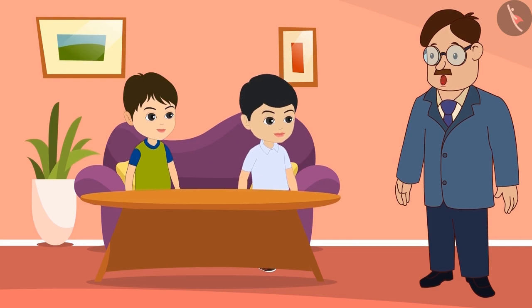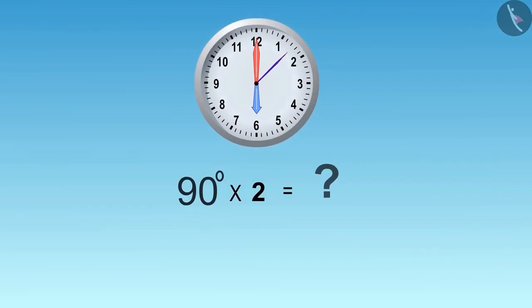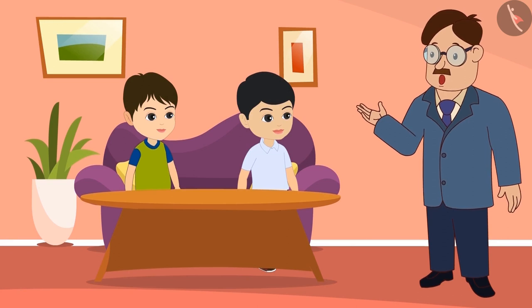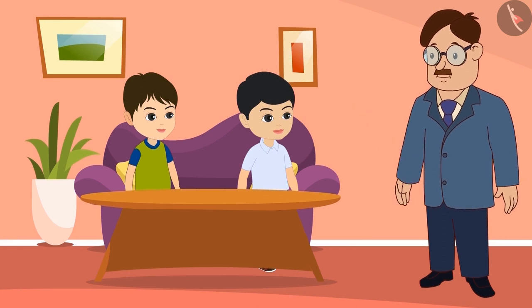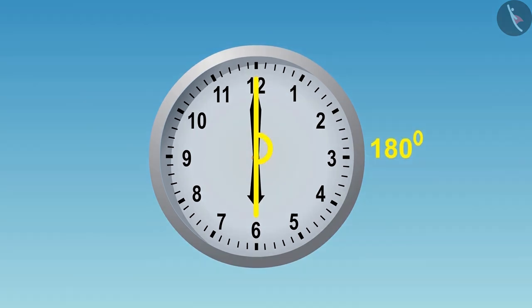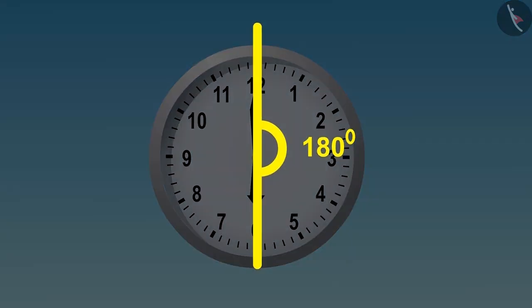Okay, children. Can you tell me what is double of 90 degrees? Uncle, double of 90 is 180 degrees. Absolutely correct, Golu. Now look at this angle, children — this is double of 90 degrees, that is a 180 degrees angle.